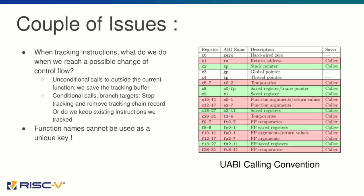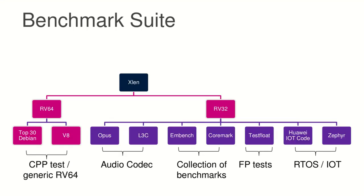Initially, when I implemented this, the main key I used for the instruction record was the function name — which was a bad idea, because function names can be non-unique if using static functions. I didn't realize this until I saw multiple function content being written into the same entry in the instruction record, so I had to come up with a unique naming scheme.